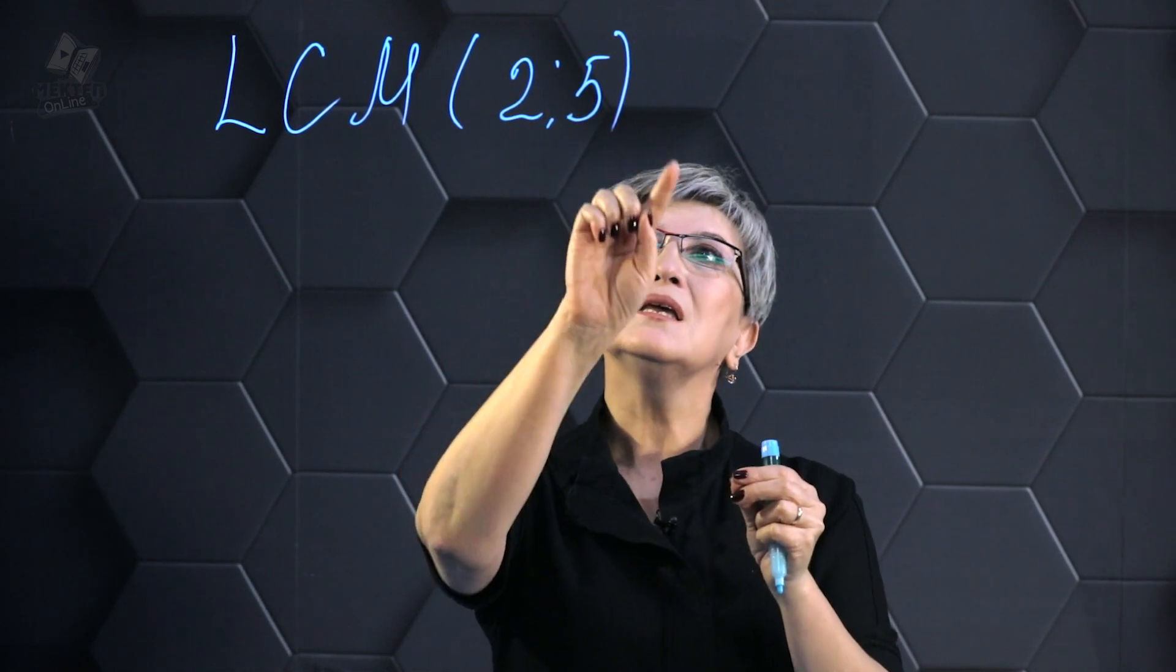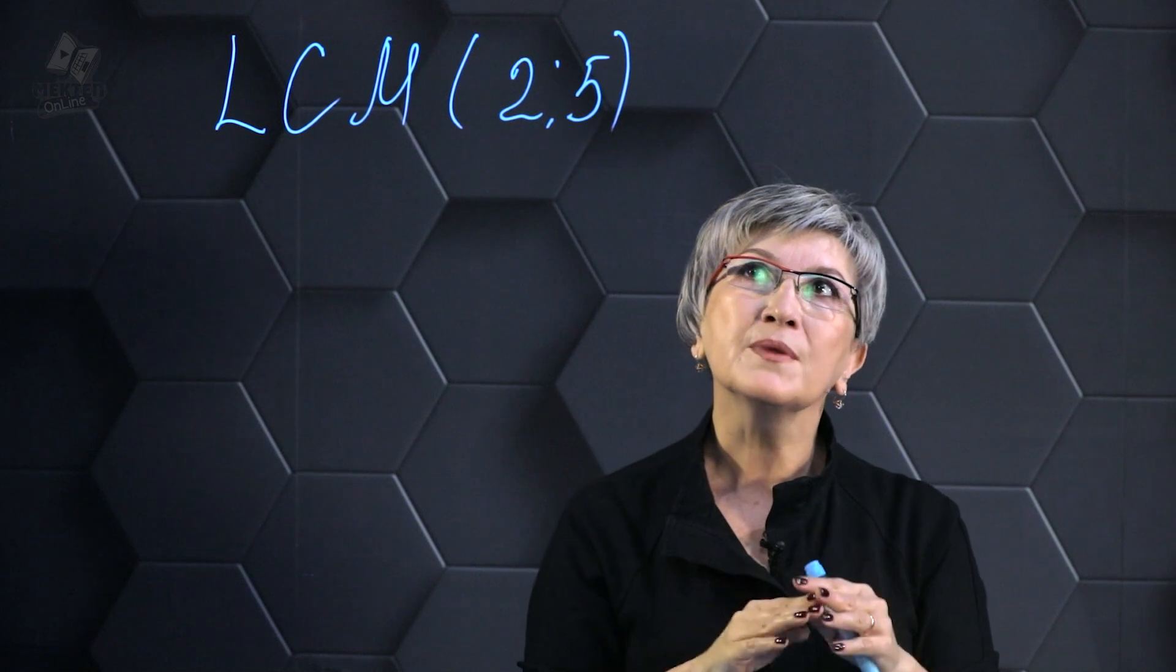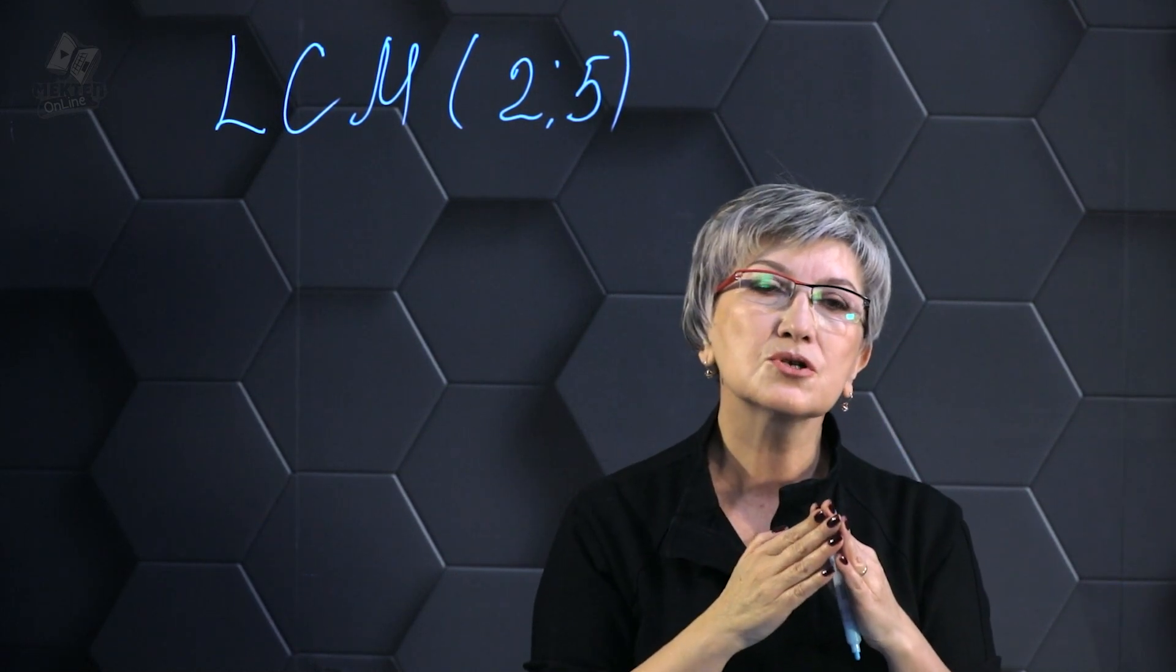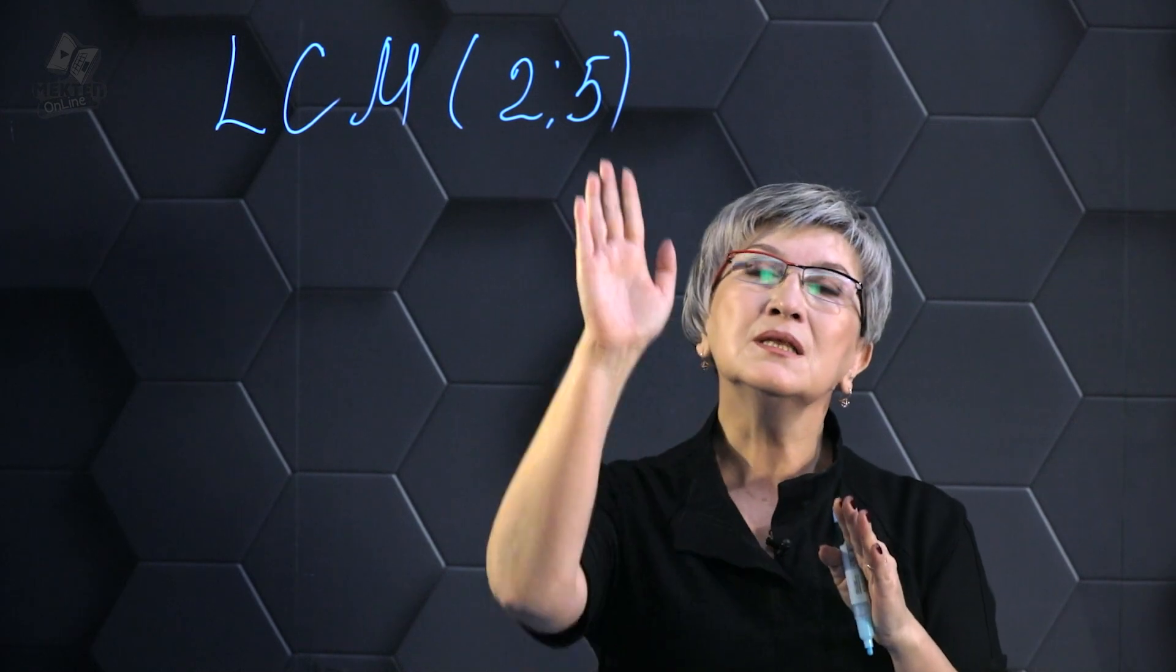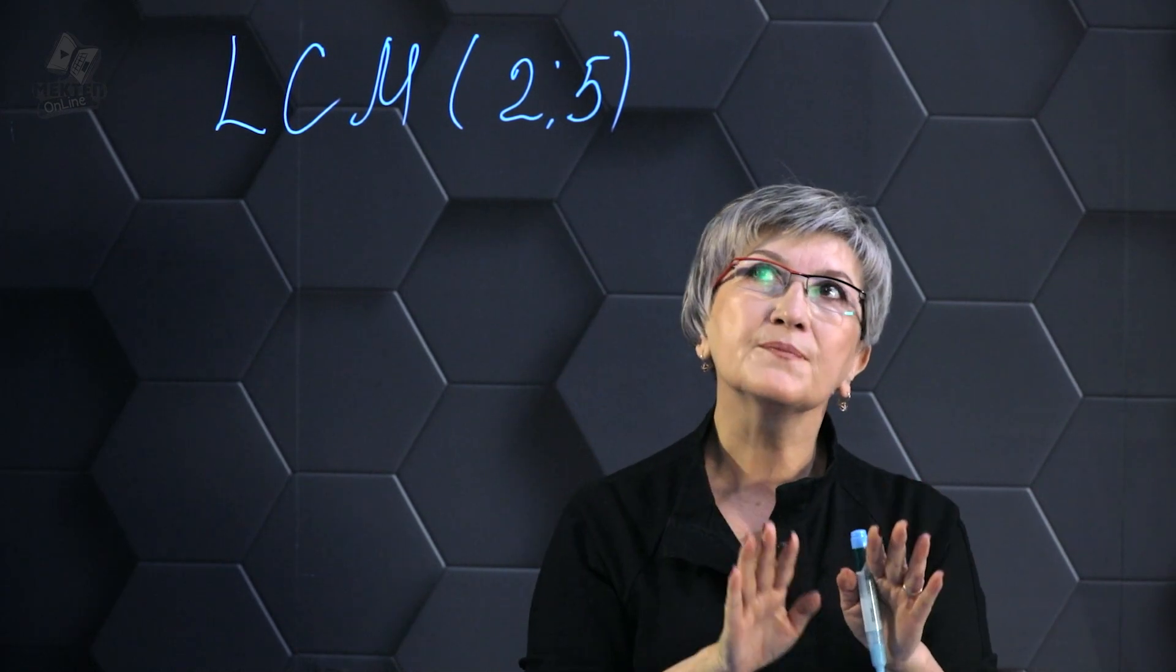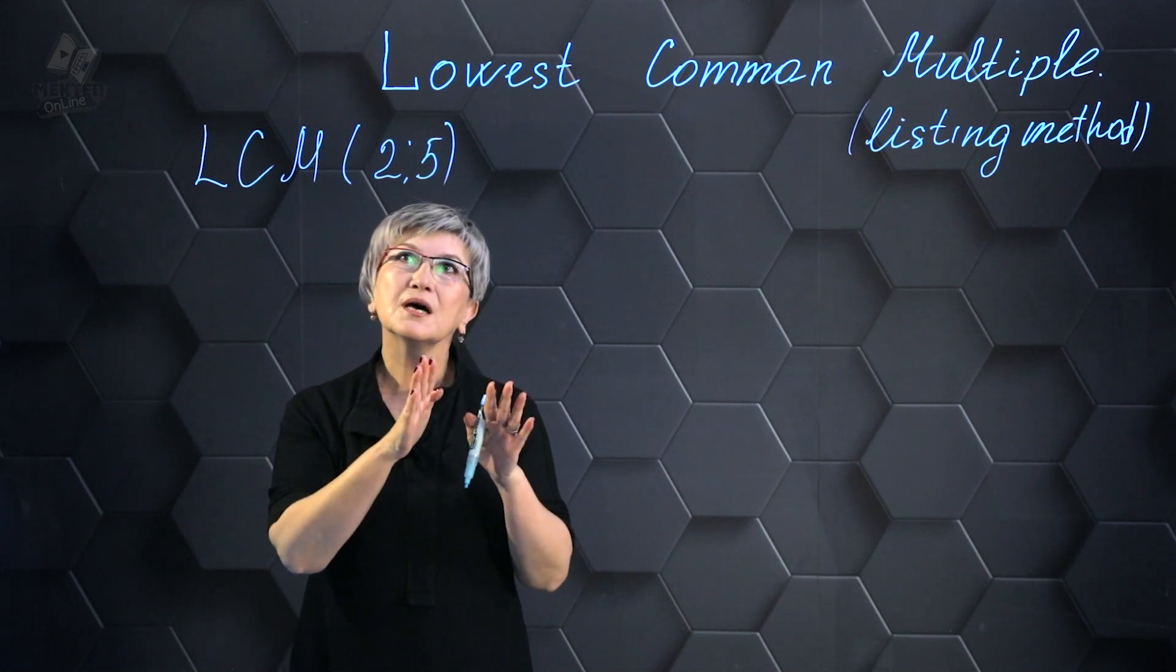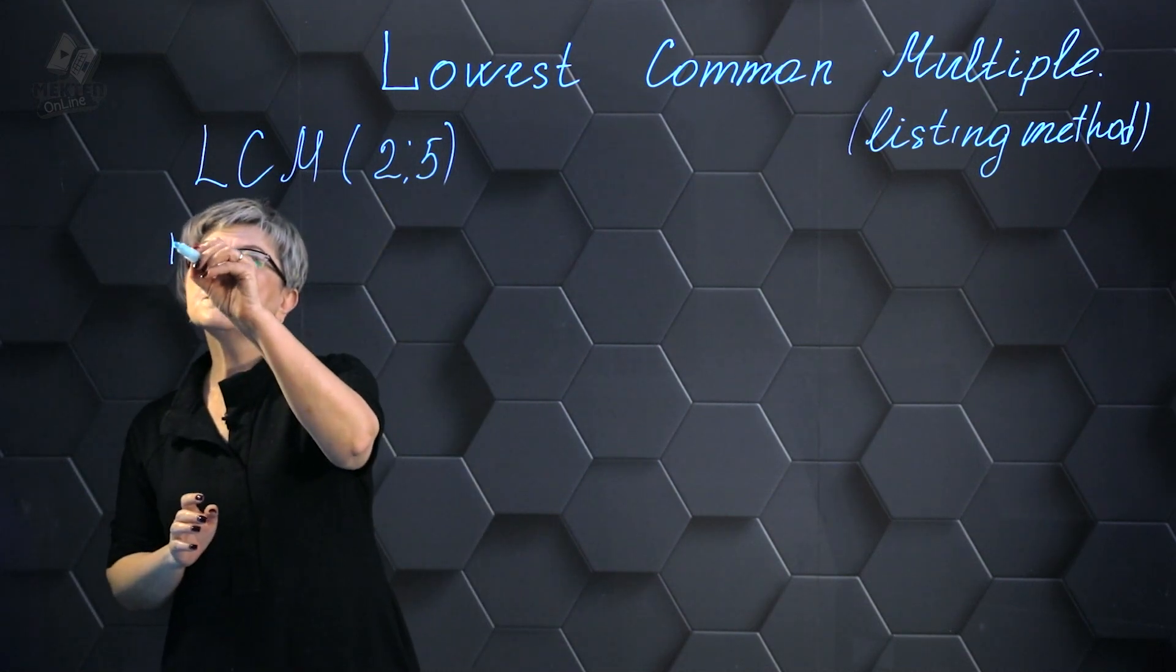We need to find a number that is divisible by both 2 and 5 without any remainder. Naturally, a lot of you have already deduced the number, but we will be honing our technique on straightforward numbers. So initially we will write down multiples of 2, then multiples of 5, and then find the common ones.